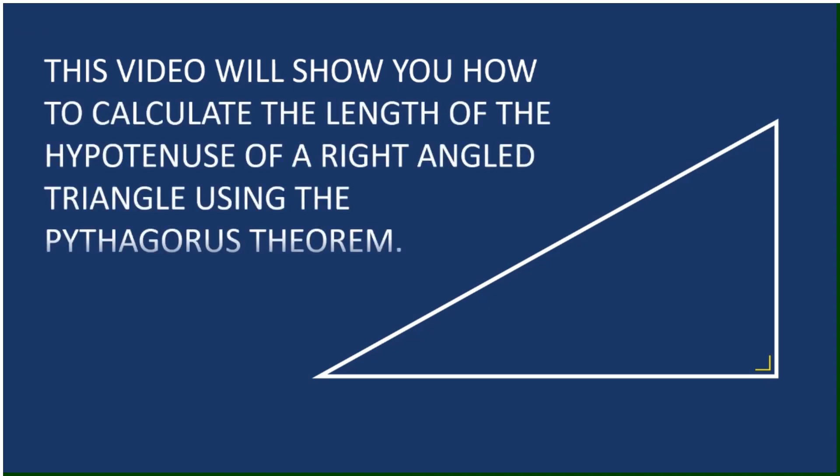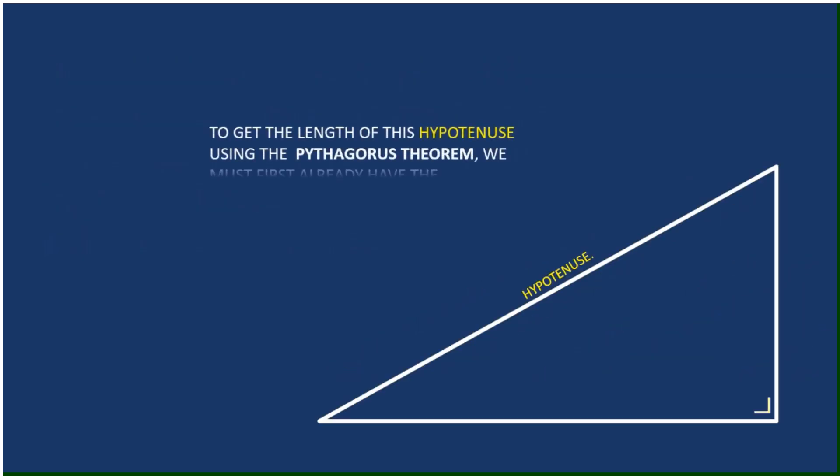Hi everyone, here we're going through the steps involved to get the hypotenuse of a right angle triangle using what's known as the Pythagoras theorem or Pythagoras's theorem.